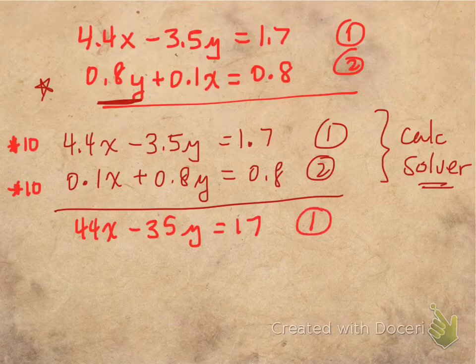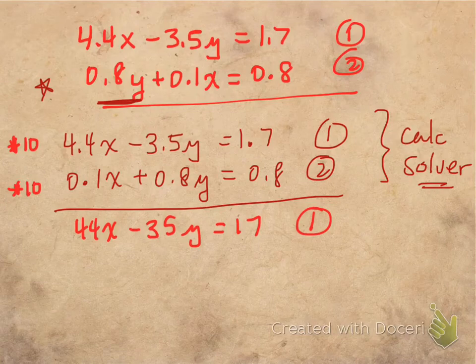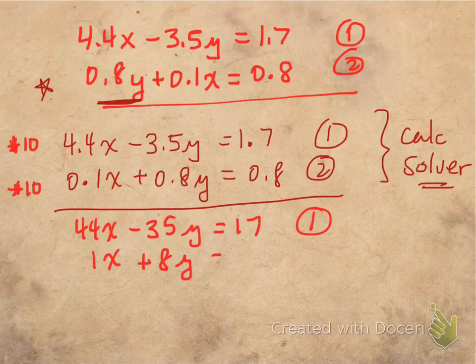And if I multiply everything by 10 for equation 2, I'll end up with 1x plus 8y is equal to 8. And that's my equation 2.